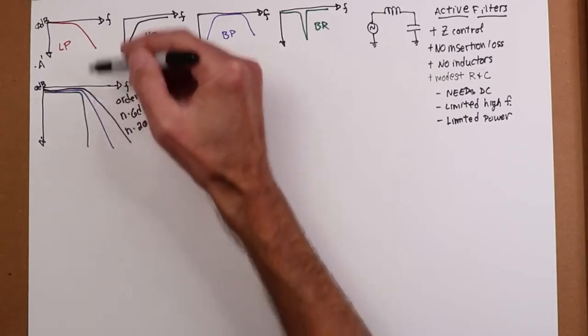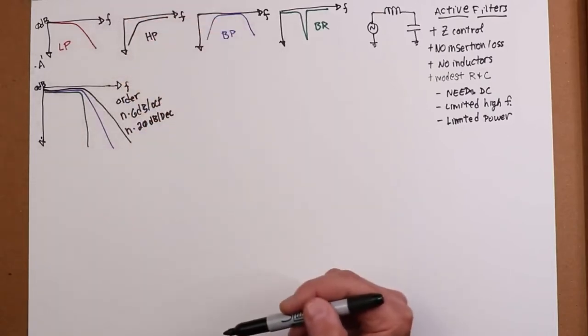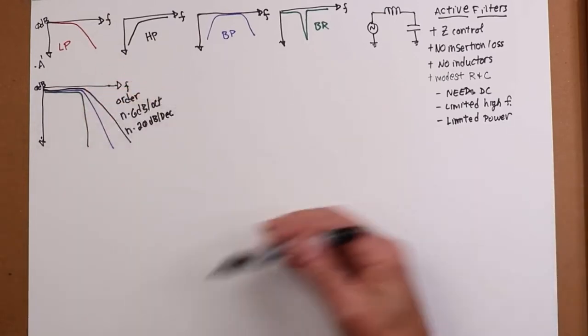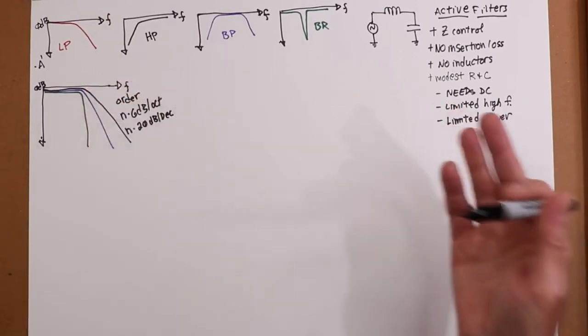If the green is, by comparison, a fifth order filter, then that slope would be 30 db per octave or 100 db per decade. So you're basically narrowing up the transition region that we mentioned. There's no reason to have this steeper than it needs to be though, because you're just going to make a more complicated, more expensive filter.